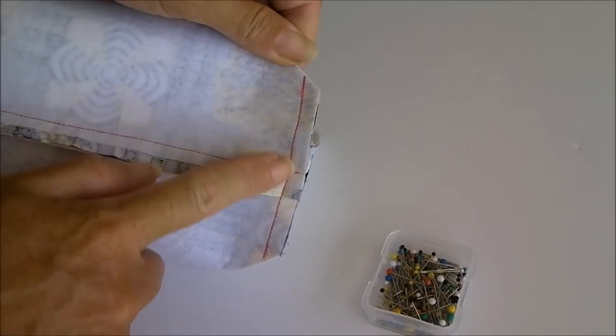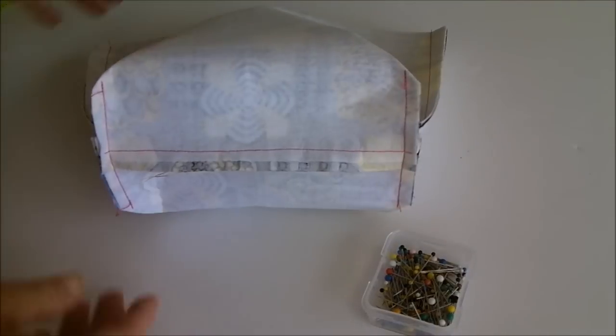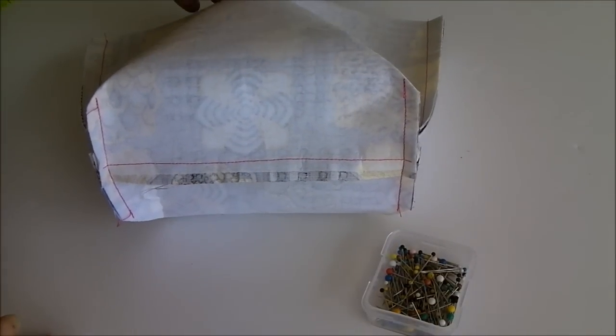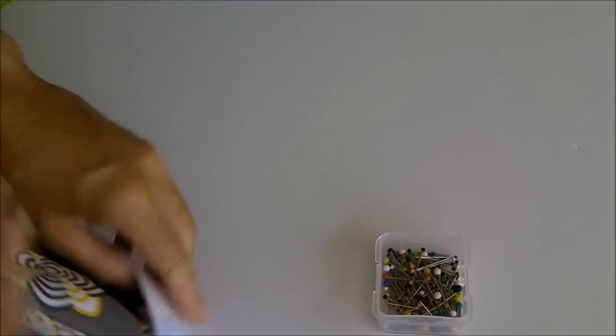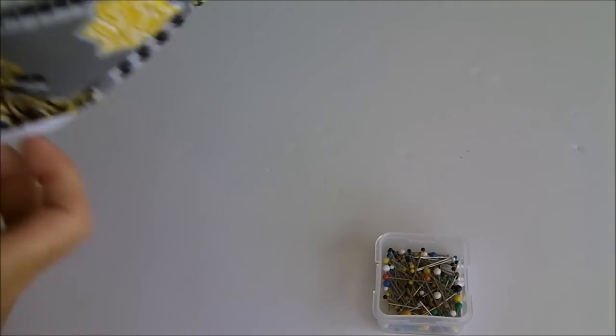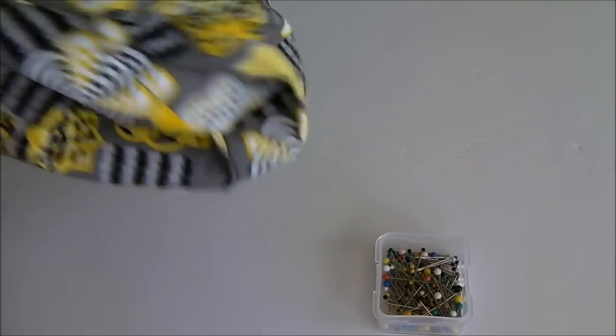So my seam is now sewn across and I've done it on both sides and already you can see there's a much more boxy shape so if I turn this out the right way now our bag should stand up on its own it's got some bottom and some volume obviously it's a little bit out of proportion we're just making a test.